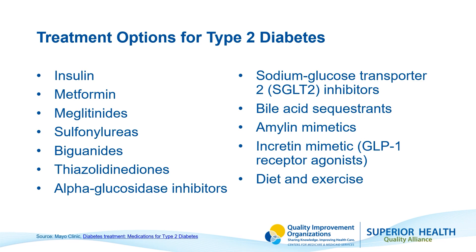For type 2 diabetes treatment, options include increasing insulin secretion by prescribing sulfonylureas, improving insulin sensitivity using metformin, and reducing carbohydrate intake using GLP-1 receptor agonist medications. These treatments all help manage blood sugar levels effectively.